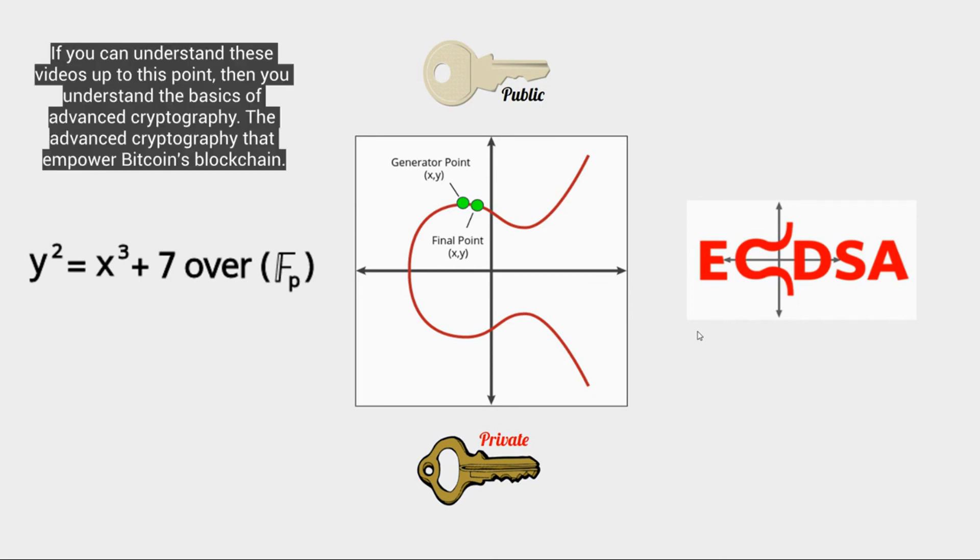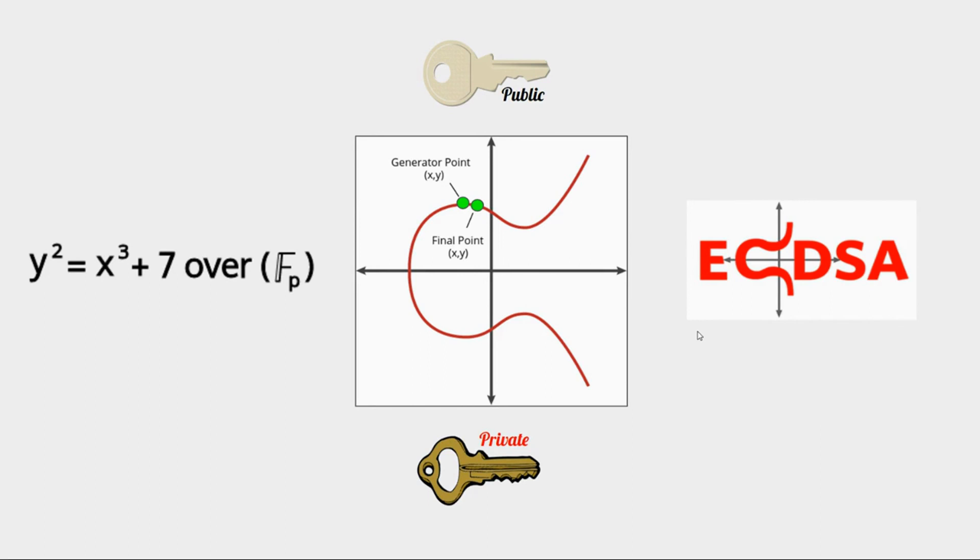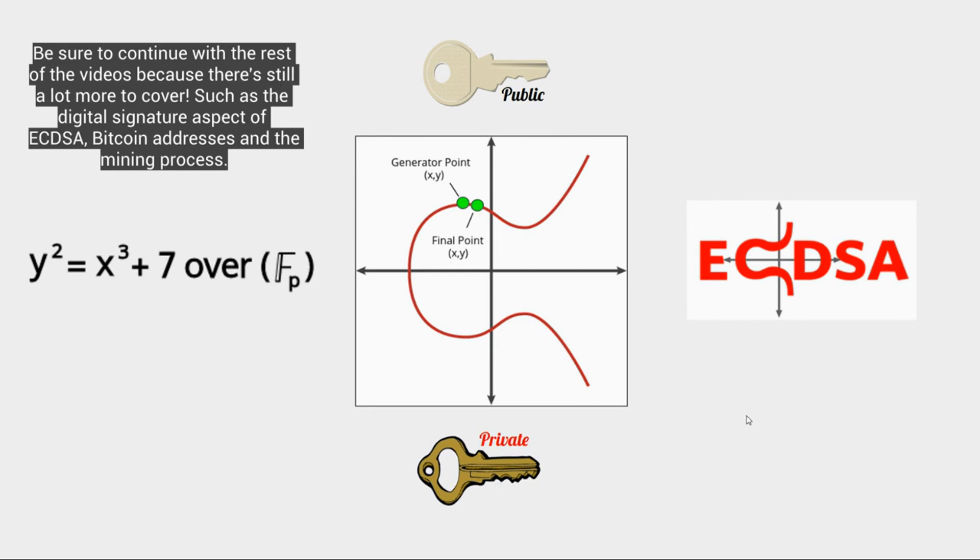If you can understand all of the videos up to this point, you will understand the basics of advanced cryptography, the advanced cryptography that empowers Bitcoin's blockchain. But be sure to continue with the rest of the videos because there's still a lot more to cover, such as the digital signature aspect of ECDSA, Bitcoin addresses and the whole mining process.